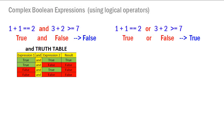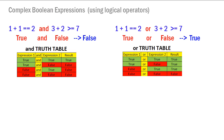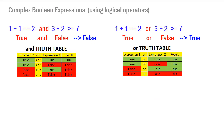Now let's look at the 'or' logical operator using the same expression: '1 plus 1 is equal to 2 or 3 plus 2 is greater than or equal to 7'. We have true on the left and false on the right, but 'or' changes the evaluation — it's true if one or the other side is true. The truth table for 'or' shows: if both sides are true the result is true, if either side is true the result is true, but if both sides are false it evaluates to false.